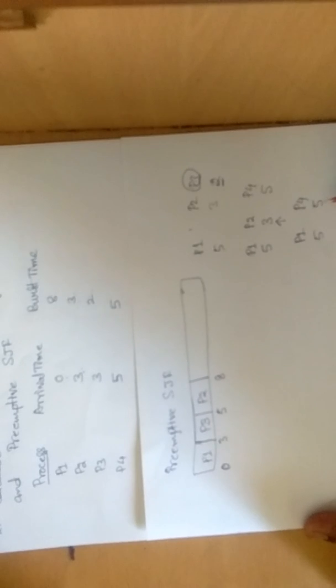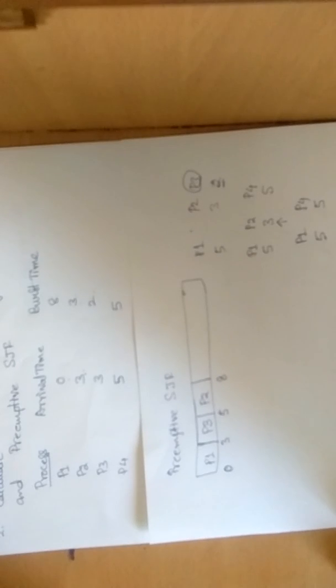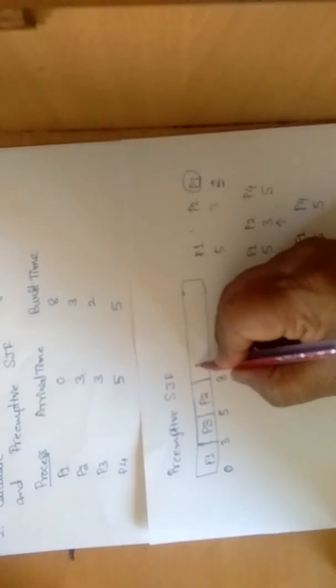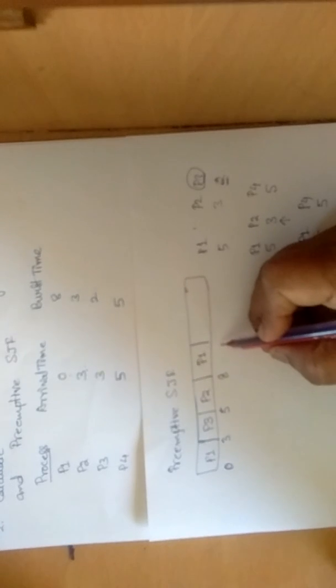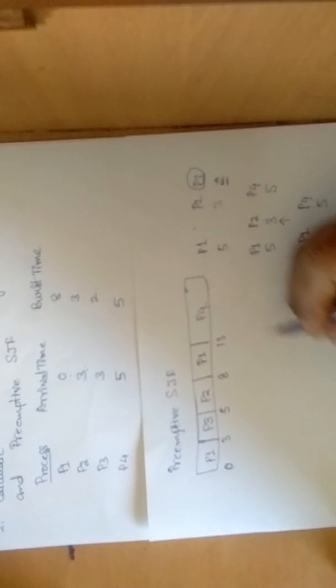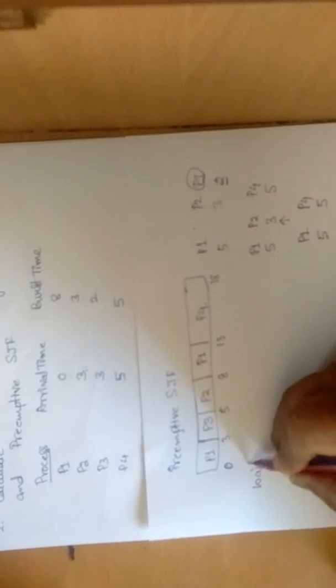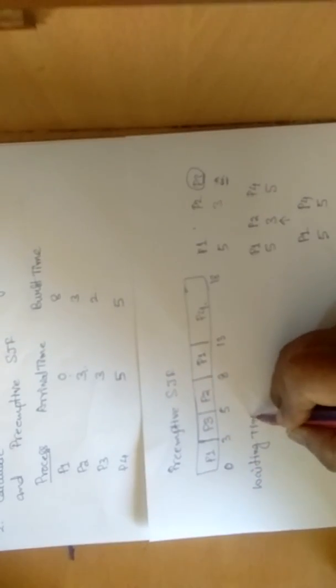The leftover processes p1 and p4 have equal burst times. In SJF, when burst times are equal, we use the first-come-first-serve criterion. So we choose p1, which runs from 8 to 8 + 5 = 13. Next is p4, which runs from 13 to 13 + 5 = 18.